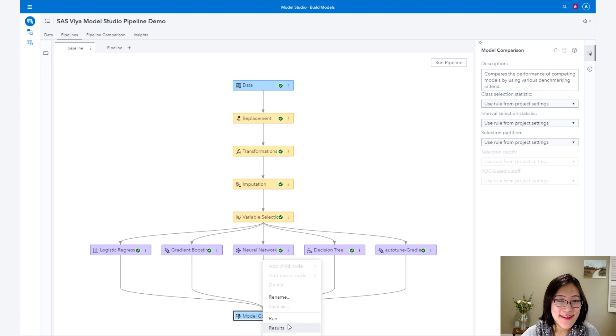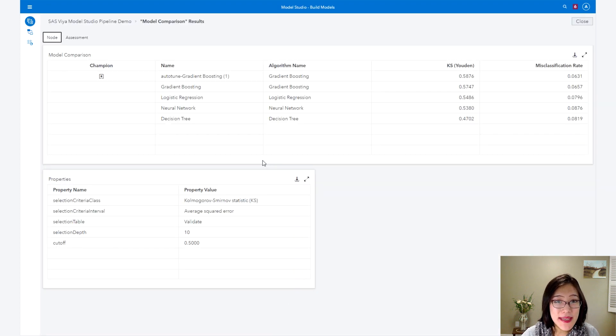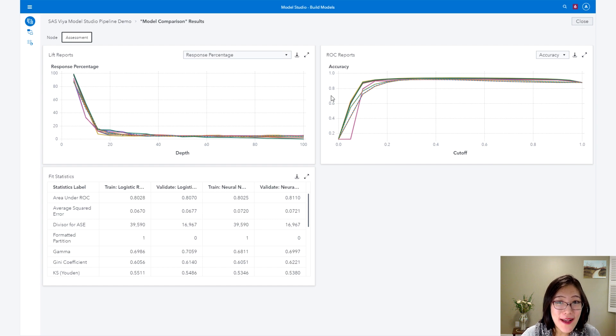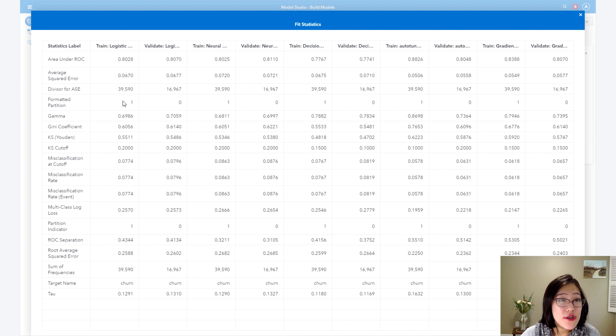We can right-click on any node to see the result. It shows me among all these models, the best one is this autoturn gradient boosting, which is a gradient boosting model as an ensemble of decision trees. In here, it picked the best algorithm using the KS Youden, which is similar to AUC ROC area under the curve. But you can feel free to specify what is your metric that you care about the most. In the assessment tab, you can see lift plots and ROC plots of all the models or the selected models. There are also other options.